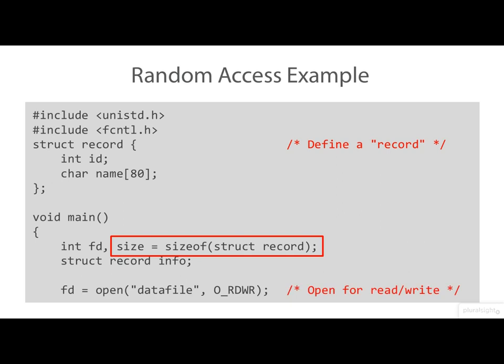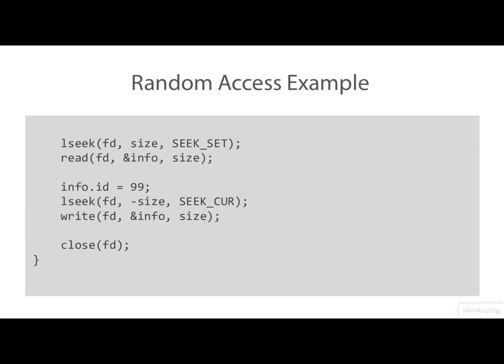So we start by opening the file. Notice we're opening it for reading and writing. Continuing the example, what we're doing here is seeking one record along from the beginning of the file. Effectively we're skipping the first record. So at this point, we read the second record into memory.